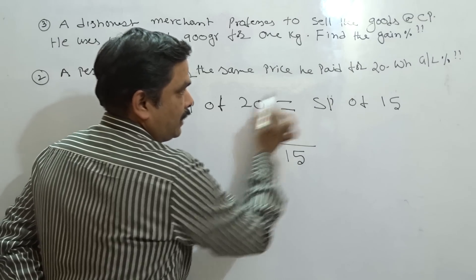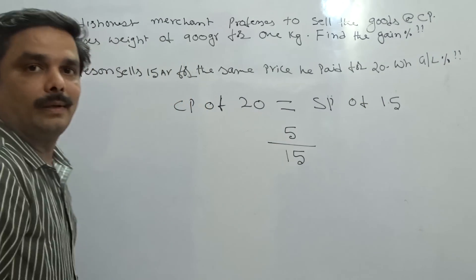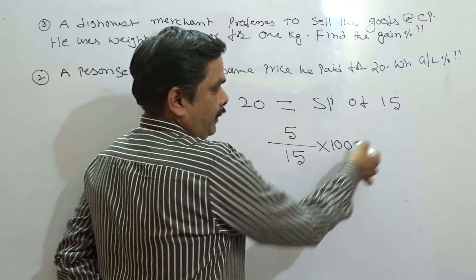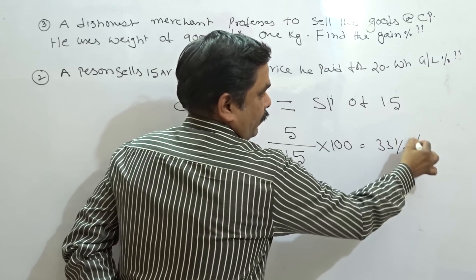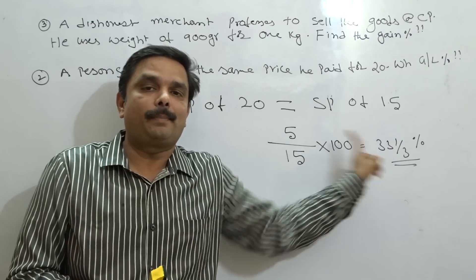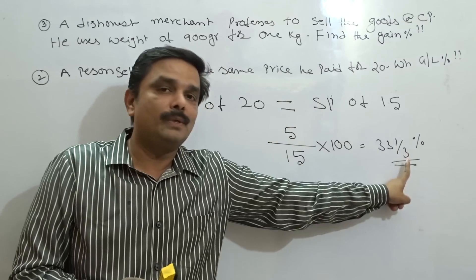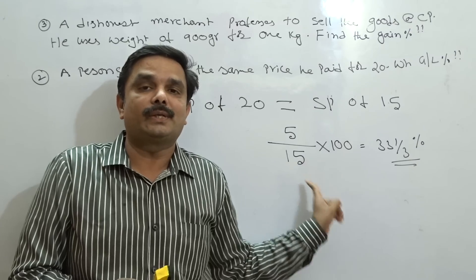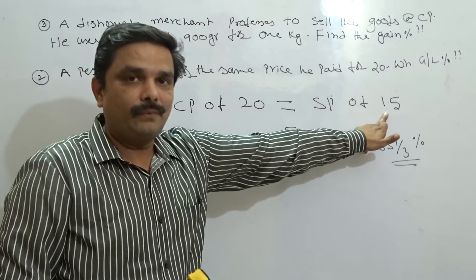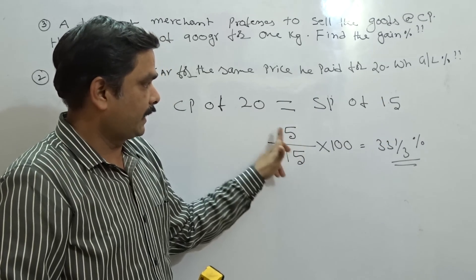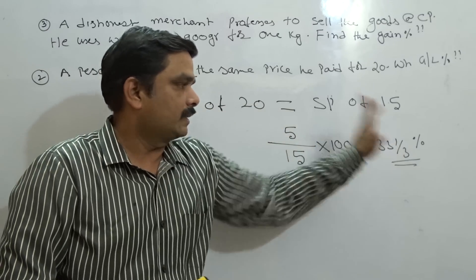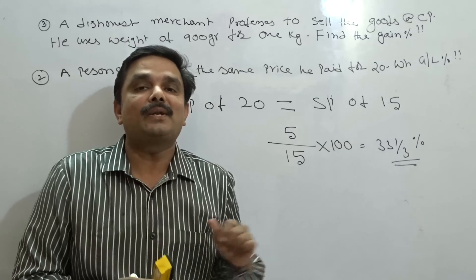This 5 is nothing but 20 minus 15, cost of 5. In terms of percentage: 5 upon 15 into 100, which is 100 by 3, nothing but 33 and 1/3 percent. This is the best way to go for this type of question. Cost price of 20 equals selling price of 15, meaning on selling every 15 articles he gains the equivalent of cost price of 5. So the answer is 33 and 1/3 percent profit.